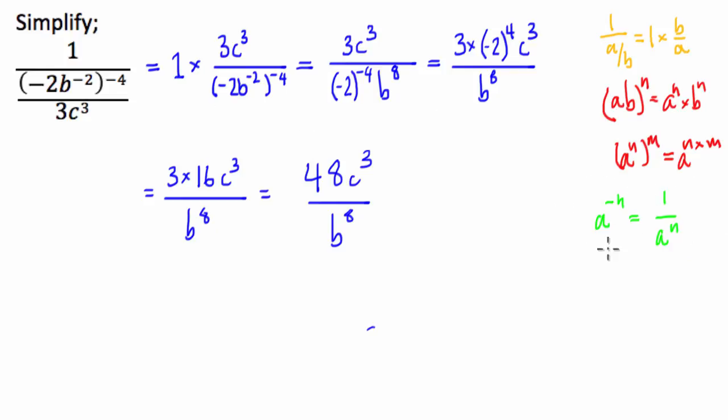We then used the negative indices index law which says that if we have a base raised to a power of a negative index that the positive index is simply the reciprocal of that. So we moved the negative 2 to the negative 4 up into the numerator. What we then did is then we took negative 2 to the power of 4 to be 16. We used the commutative property of multiplication just to insert the 16 in here and then multiplied out 3 times 16 which gave us 48 c cubed on b to the power of 8.